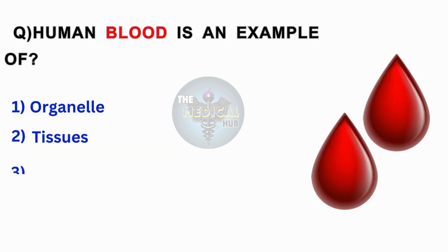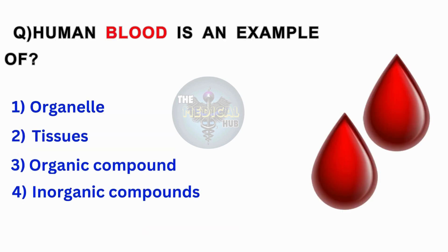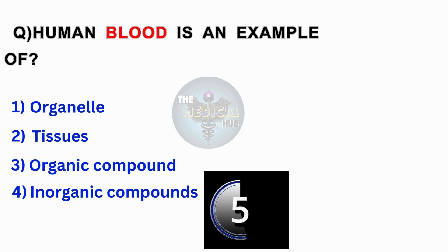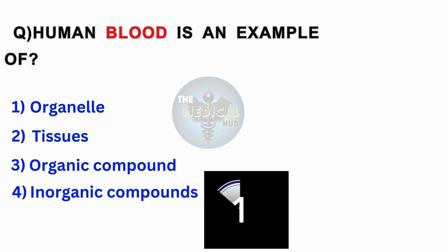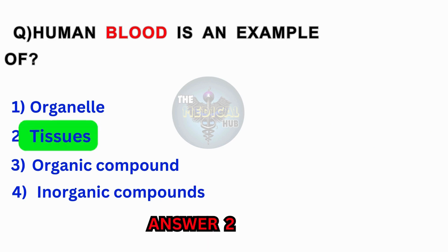Human blood is an example of? Tissues, organic compound, inorganic compounds. Answer 2: Tissues.